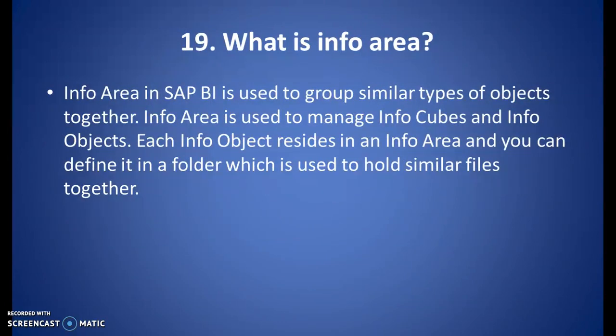What is info area? Info area in SAP BI is used to group similar types of objects together. Info area is used to manage info cubes and info objects. Each info object resides in an info area, and you can define it as a folder which is used to hold similar files together.